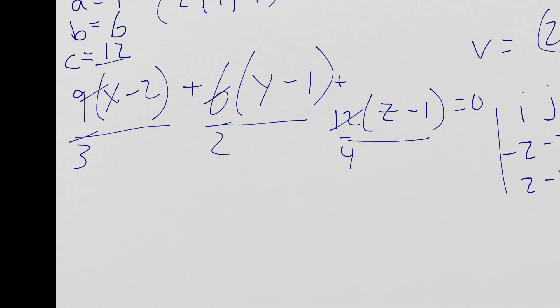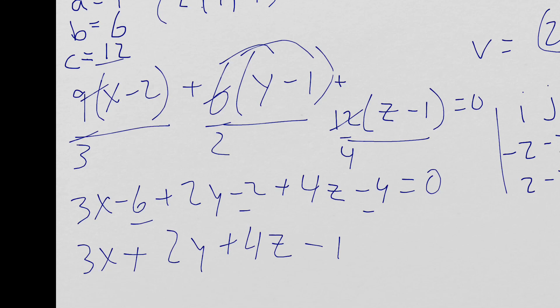So now you get 3X minus 6 just by rainbowing these out. So I'll get 2Y minus 2. 4Z minus 4 equals 0. 3X plus 2Y plus 4Z. Combining these terms, negative 8 minus 12 equals 0. This is the equation of your plane.